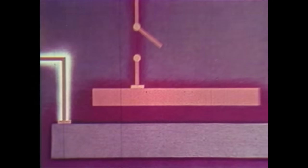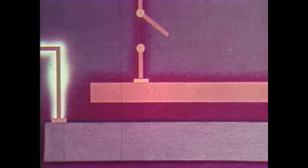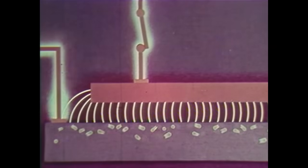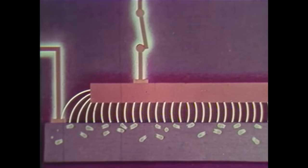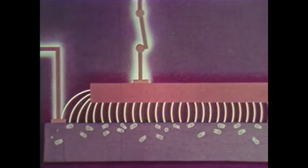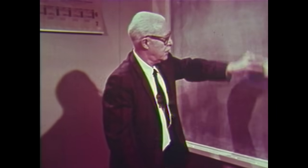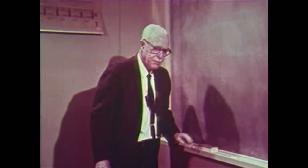The negative result of the field effect experiments was an important factor in suggesting to John Bardeen that electrons were trapped in the surface of the semiconductor. This theory suggested new experiments which Walter Bratton carried out. Recently, Dr. Bratton described some of the experiments.